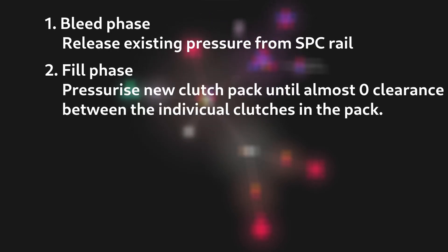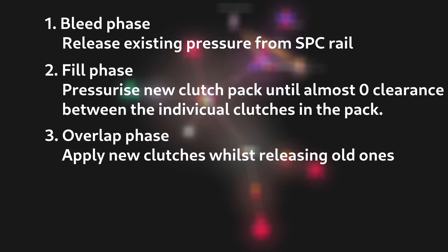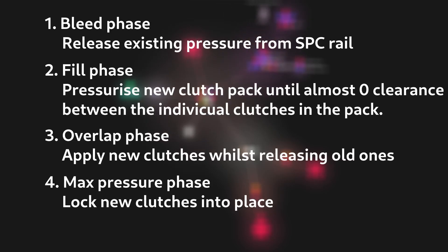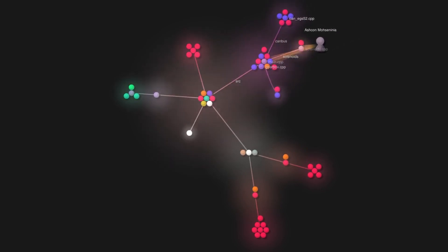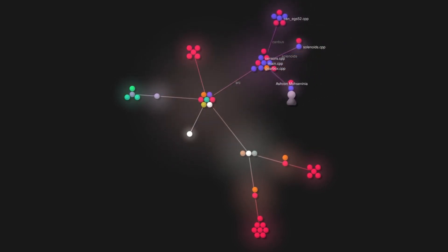In addition to this, the TCU has to be able to learn how worn the clutches are in the gearbox in order to compensate for mechanical wear and tear to achieve a smooth, clean shift. So, let's look at how this has been accomplished on the TCU firmware side.